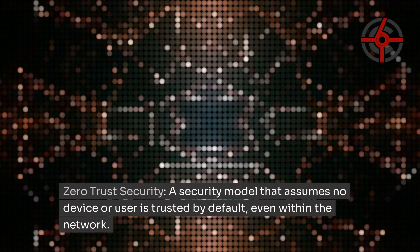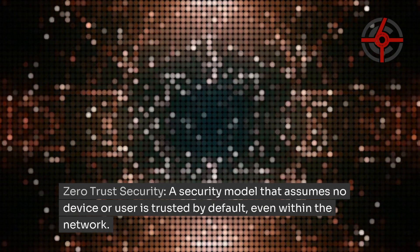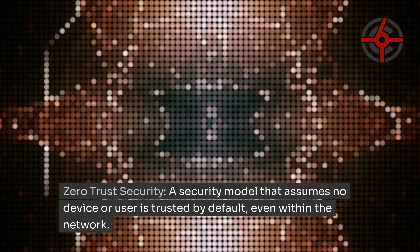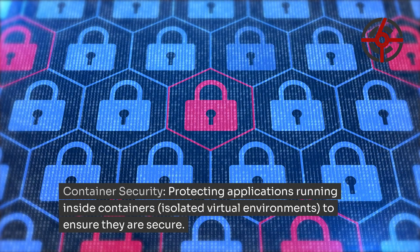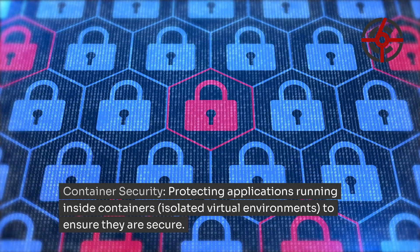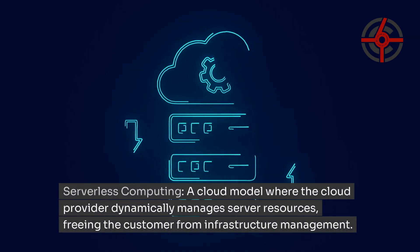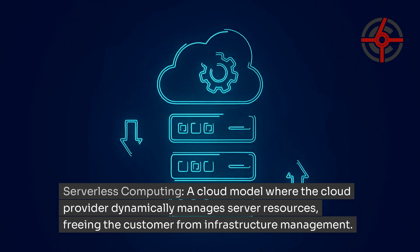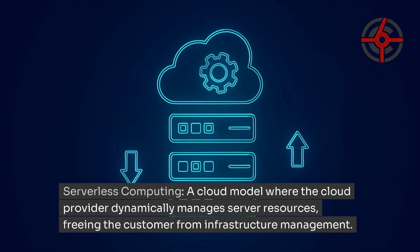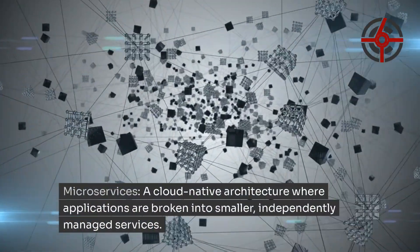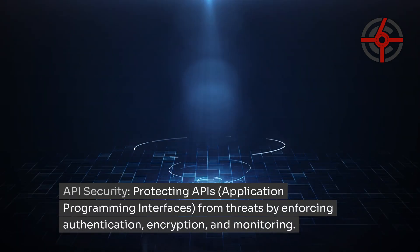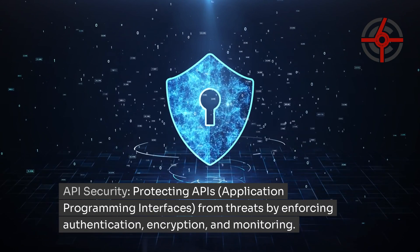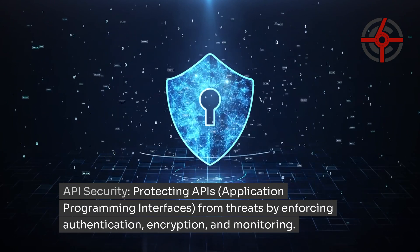Zero Trust Security: a security model that assumes no device or user is trusted by default, even within the network. Container Security: protecting applications running inside containers — isolated virtual environments — to ensure they are secure. Serverless Computing: a cloud model where the cloud provider dynamically manages server resources, freeing the customer from infrastructure management. Microservices: a cloud-native architecture where applications are broken into smaller, independently managed services. API Security: protecting APIs from threats by enforcing authentication, encryption, and monitoring.